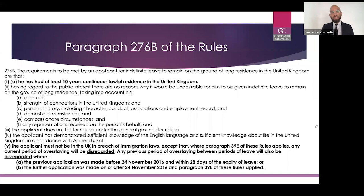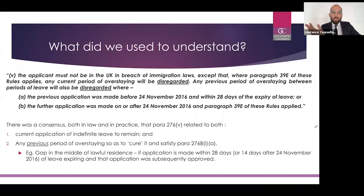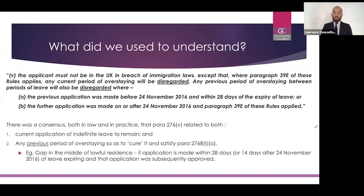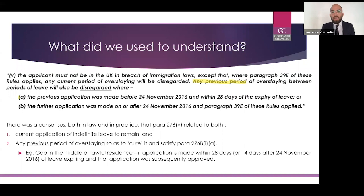What we used to understand from sub-paragraph five of 276B of the rules is that there was, in essence, a consensus both in law and in practice that 276B(5) related to both current applications for indefinite leave to remain — so that if you are in the UK unlawfully at the time of the application then it will be refused under 276B(5) — but it also had the effect, because it referred to previous periods of overstaying, that if you had overstayed your visa before the application for indefinite leave to remain, then those periods would essentially be cured so that you wouldn't fall foul of the first requirement of continuous lawful residence. That was everybody's understanding.